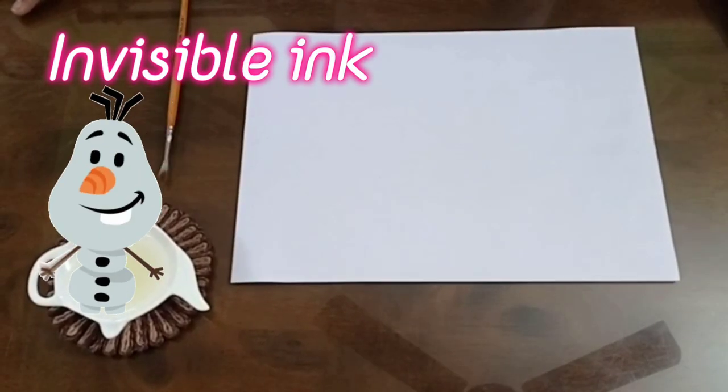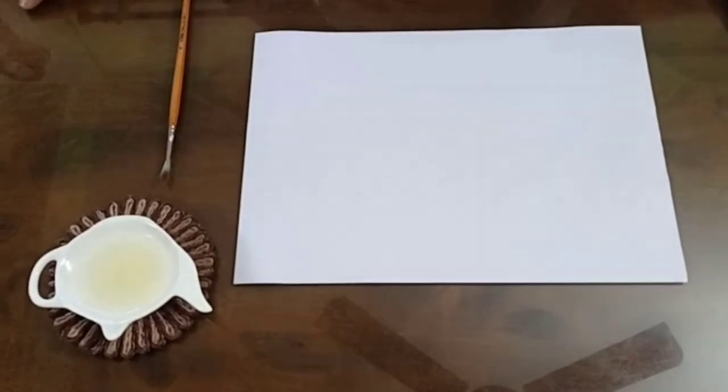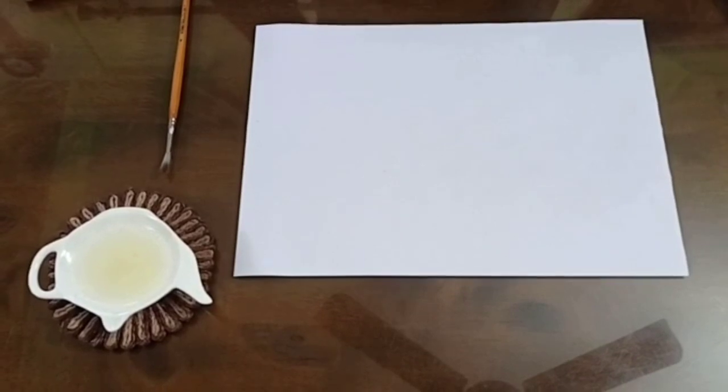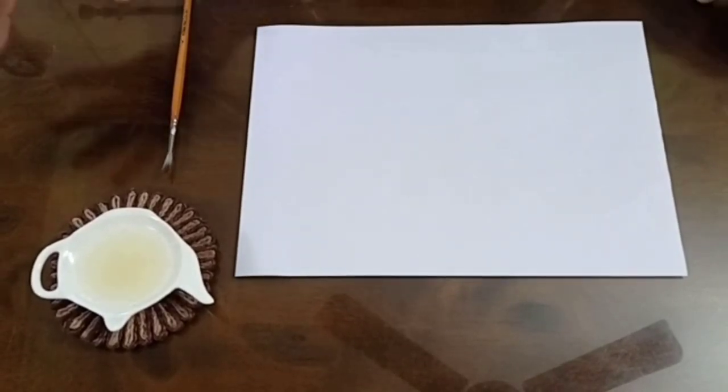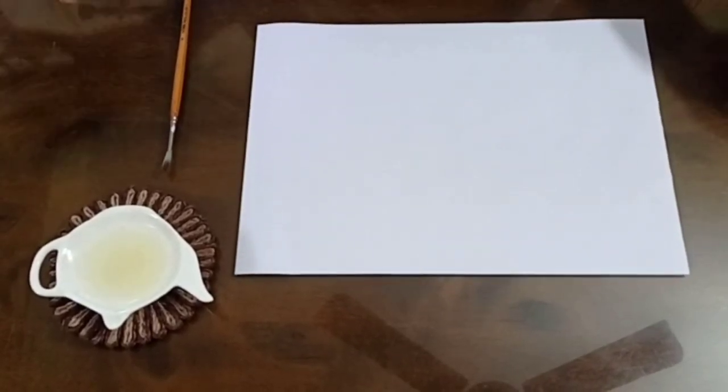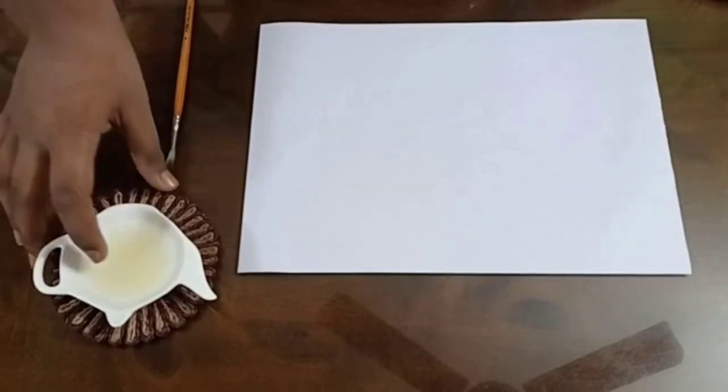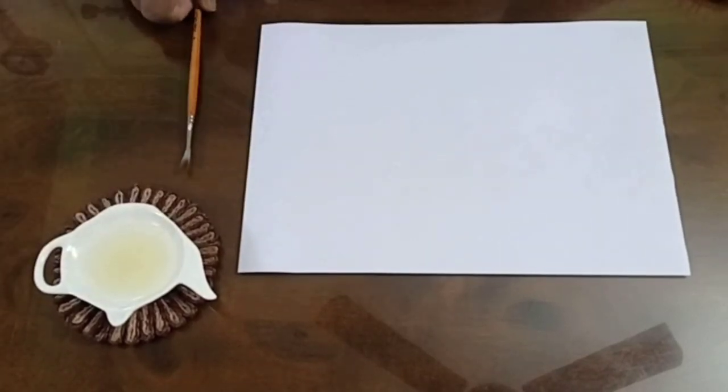Hello everyone, today I will tell you how to make invisible ink using lemon juice by which you can write a secret message to your friends. For this we need freshly squeezed lemon juice, a paintbrush, and a white paper. Instead of a brush you can also use an earbud.